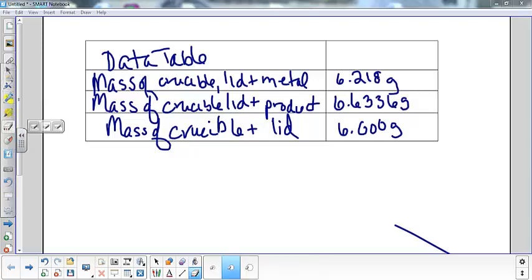Alright, what I'm going to do today is take you through the calculations for the lab for gravimetric analysis on the empirical formula. You should have the data table copied into your notebook. If you did not get the data down, this is what you need to have. If you don't have this written down, pause the video and get this jotted down because I'm going to keep going.